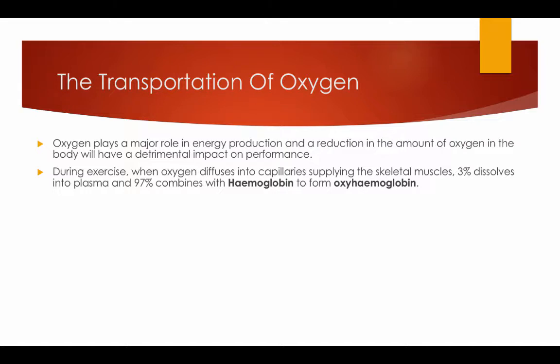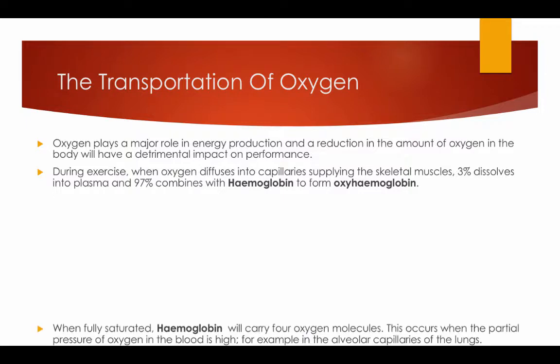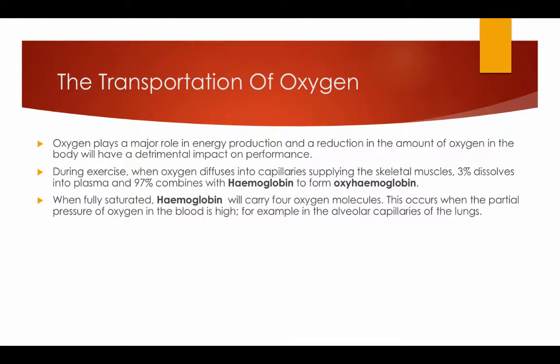During exercise, when oxygen diffuses into the capillaries supplying the skeletal muscles, 3% dissolves into plasma and 97% combines with haemoglobin to form oxyhaemoglobin. When fully saturated, haemoglobin will carry 4 oxygen molecules. This occurs when the partial pressure of oxygen in the blood is high, for example in the alveolar capillaries of the lungs.